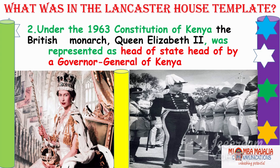What was in the Lancaster House template and the 1963 Constitution of Kenya? The British monarch, Queen Elizabeth II, who lived to 96, was represented as head of state in Kenya by the Governor General — the last one was Malcolm Donna. Even today in Britain, the head of state is the Queen and the Prime Minister works under the head of state, though more ceremonially. Every Prime Minister must report to the Queen. Now King Charles III will be the monarch.